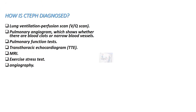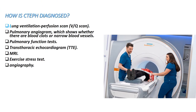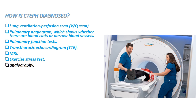How is CTEPH diagnosed? Diagnostic methods include lung ventilation perfusion scan, pulmonary angiogram which shows whether there are blood clots or narrow blood vessels, pulmonary function test, transthoracic echocardiogram, MRI, exercise stress test, and angiography.